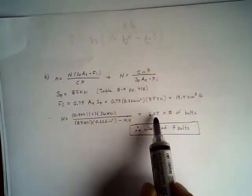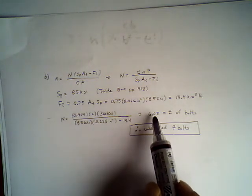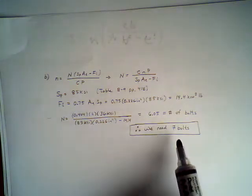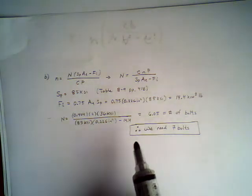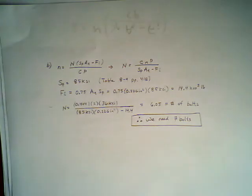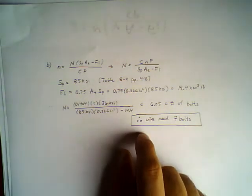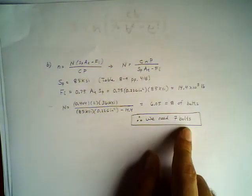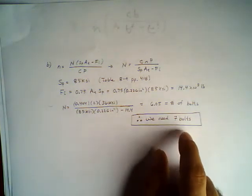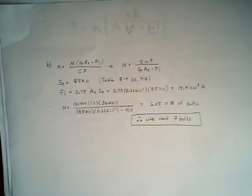If I use 6 bolts, my safety factor will be less than 2, so I need to use the next integer, which would make my safety factor probably a little bit greater than 2. So we need 7 bolts. We can't work with 6.05. If you use 6 bolts your safety factor will be less than 2; if you use 7 bolts your safety factor would be slightly greater than 2. That is it for this example.